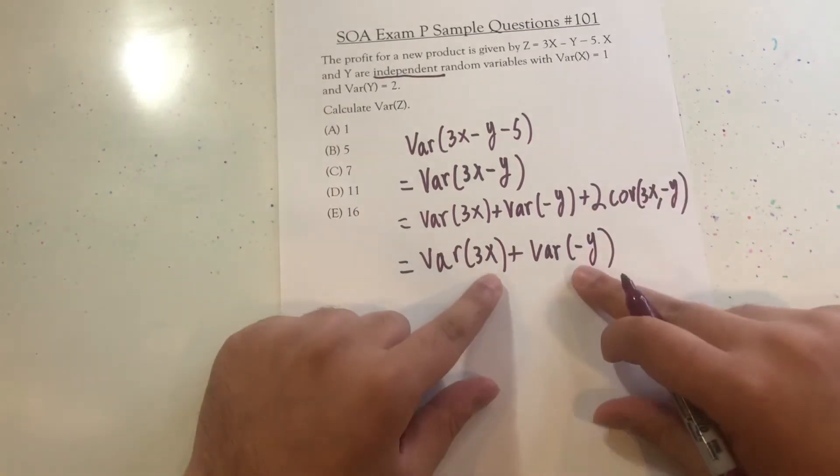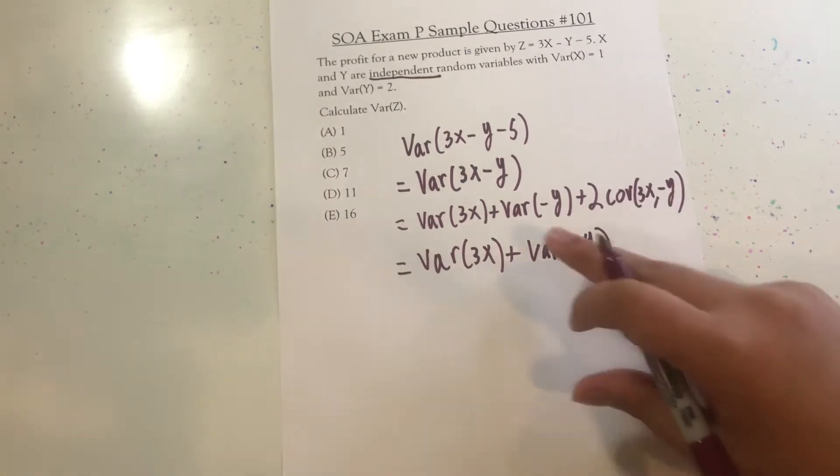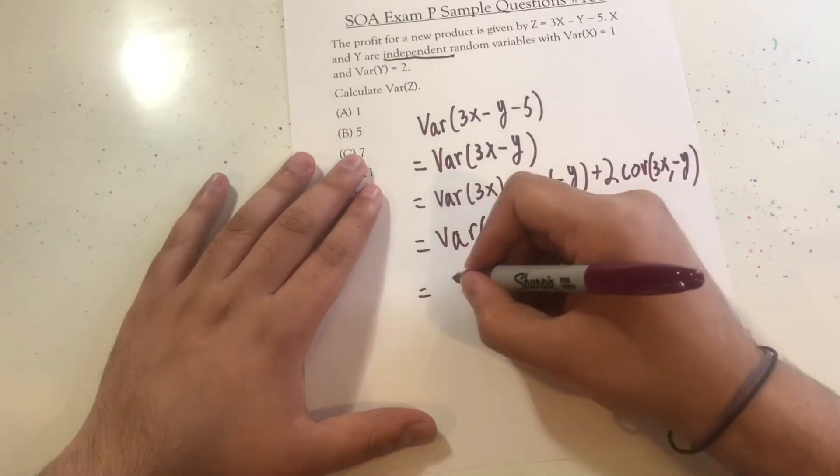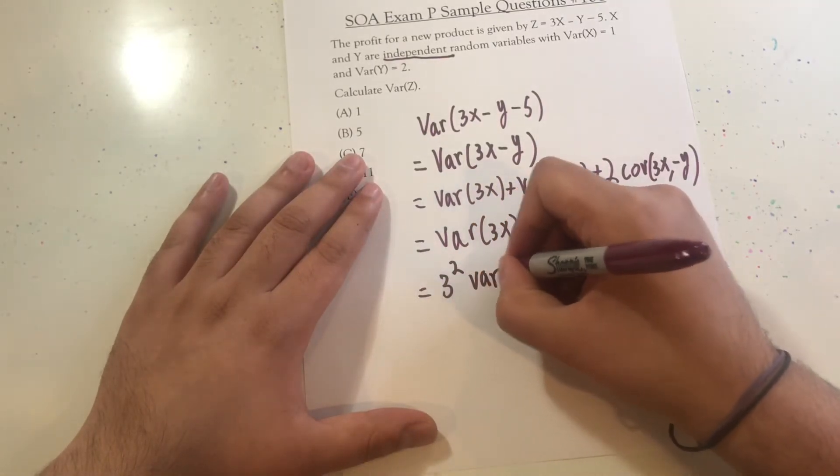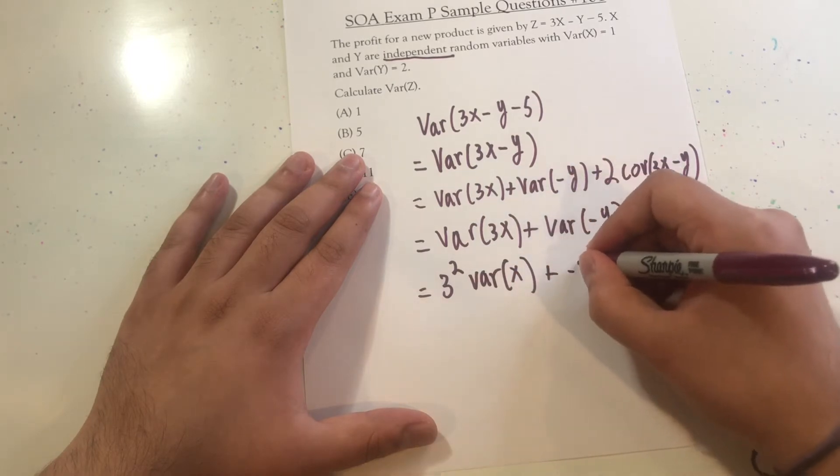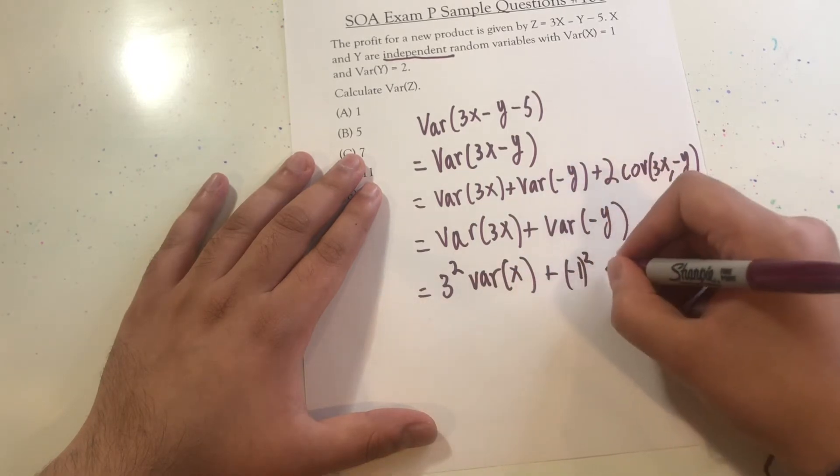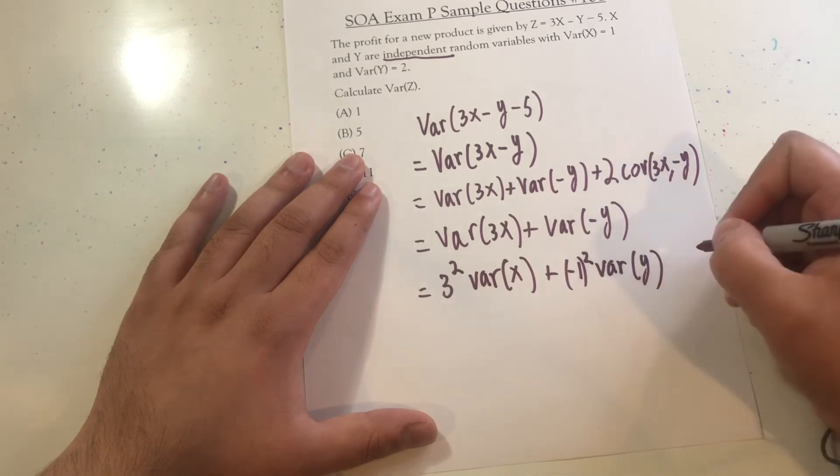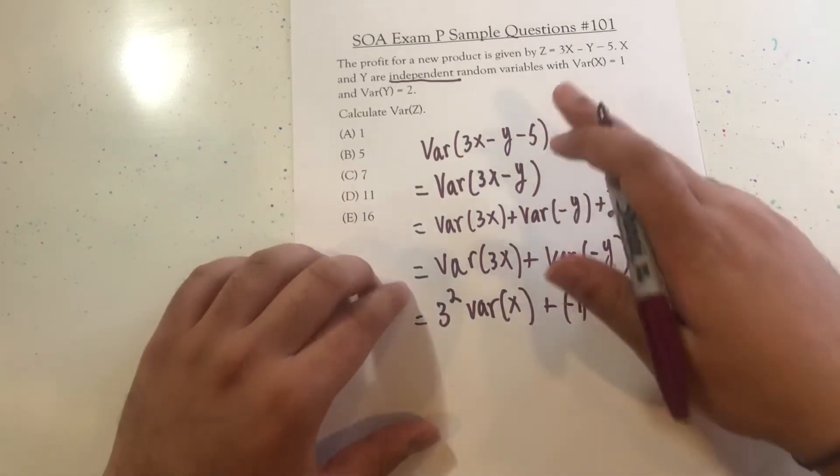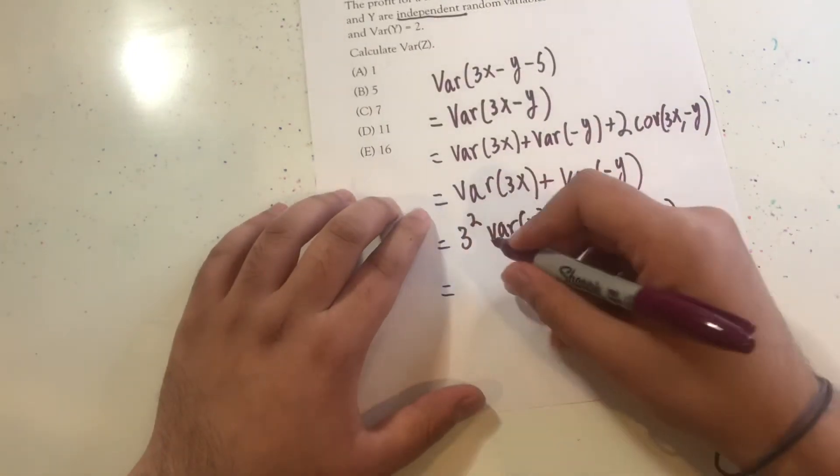And we can take out these constants up front, a negative 1 here, a 3 here, and get 3 squared variance of X plus negative 1 squared variance of Y. And since we know the variance of X to be 1, the variance of Y to be 2, make the following substitutions.